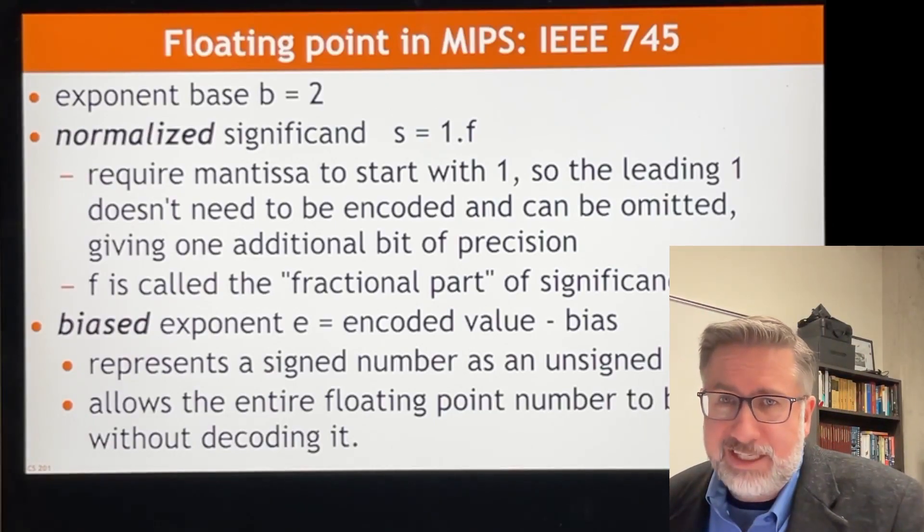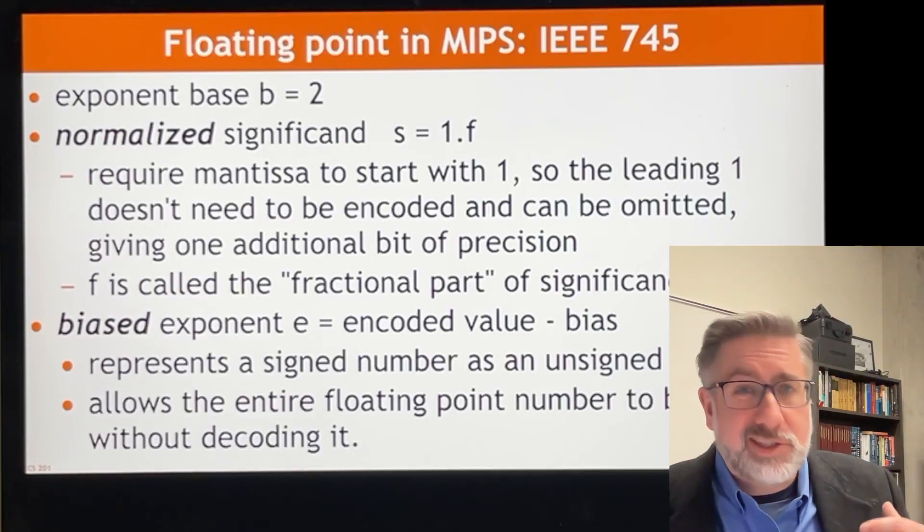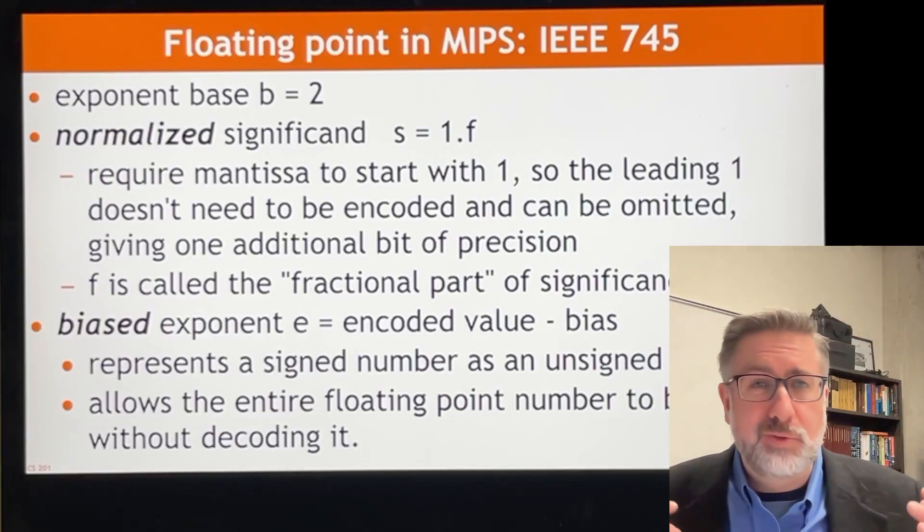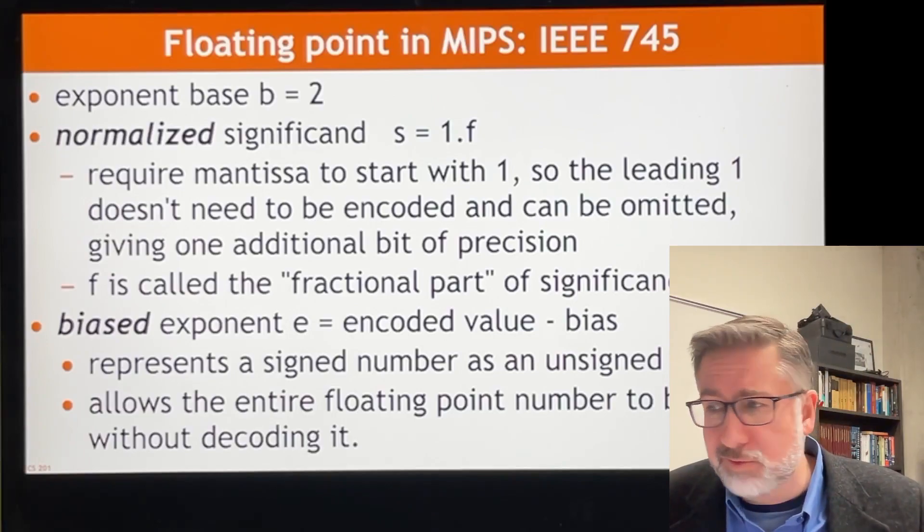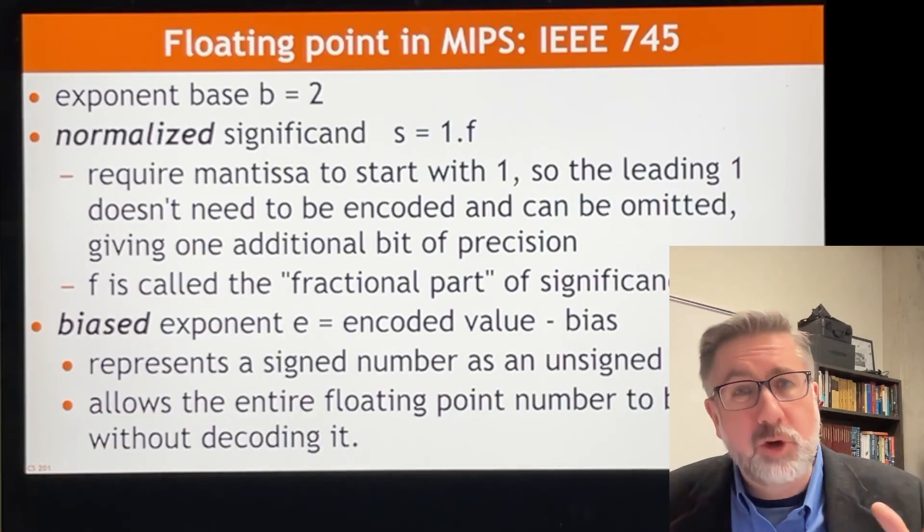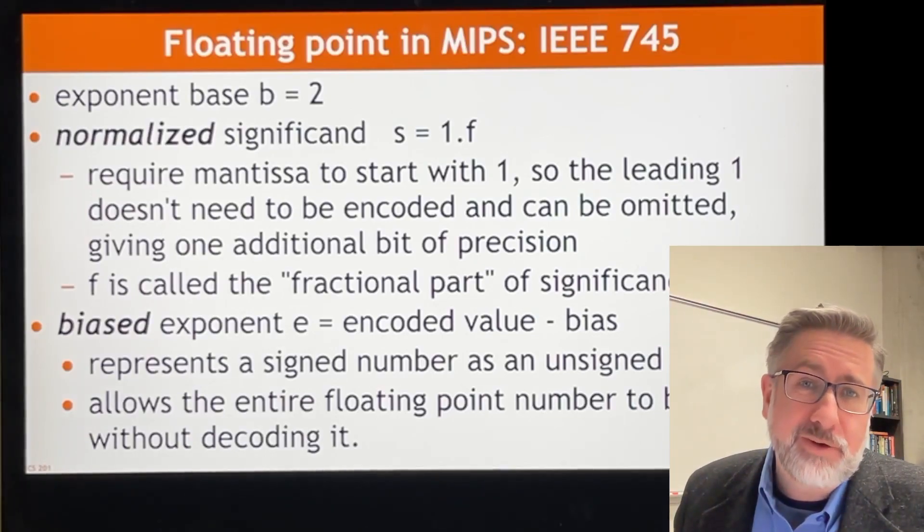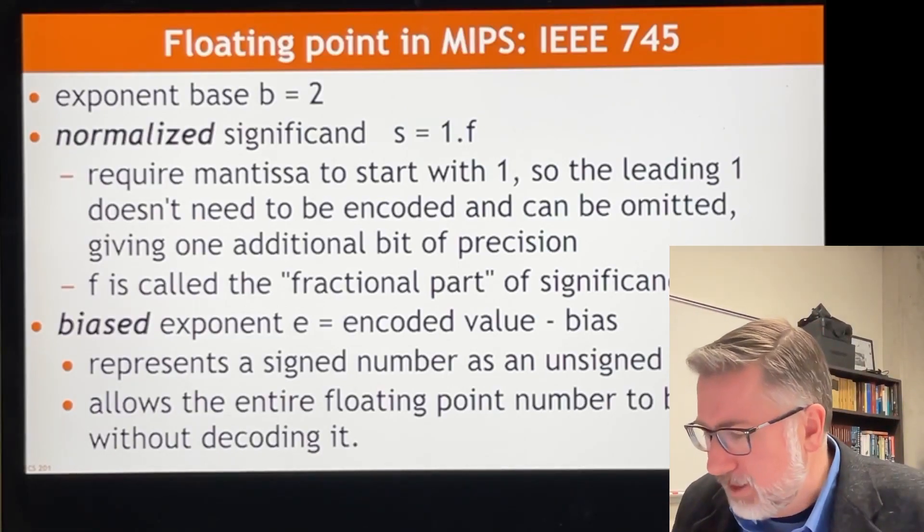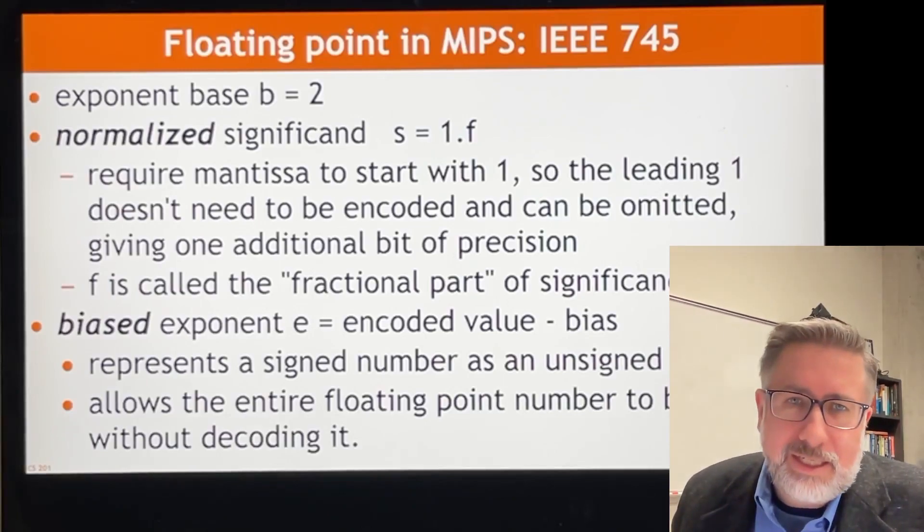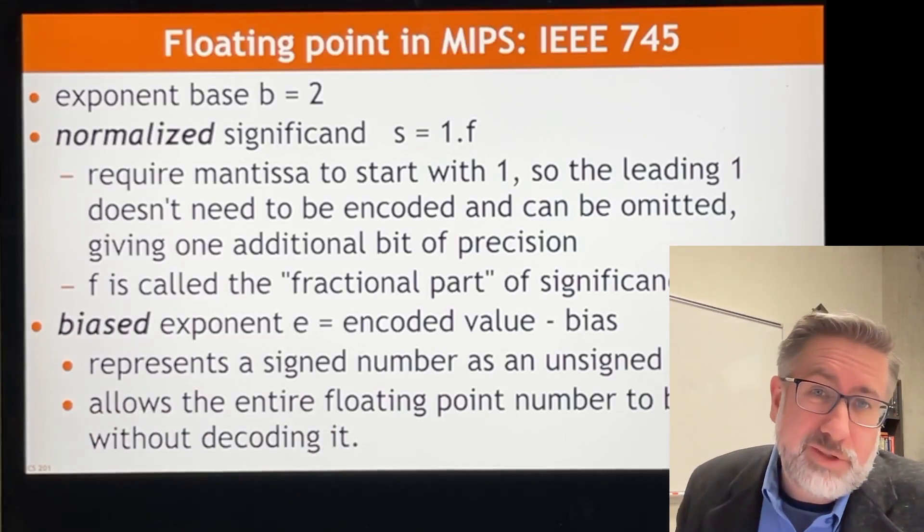Basically the idea is that it allows the entire floating point number to be sorted without decoding it. It's going to take some significant work to be able to add two floating point numbers together. So a little bit of extra work to move around the exponents is no big deal. It doesn't save us anything in terms of the effort to add two floating point numbers together if their exponents are in 2's complement. So instead we're going to use biased, and it'll be fine. So basically the idea is that it allows us to store the floating point number in such a way that we can sort them without decoding them,